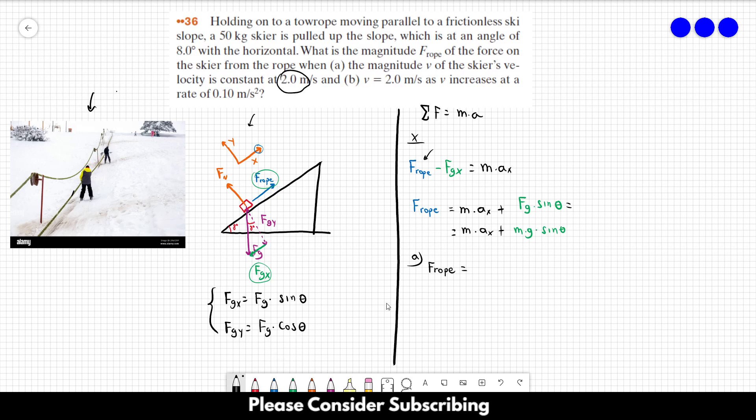We have the mass, which is 50. We have the gravity, which is 9.8, and we have the sine of 8 degrees. And this calculation gives us 68 newtons. That's the answer of letter a.